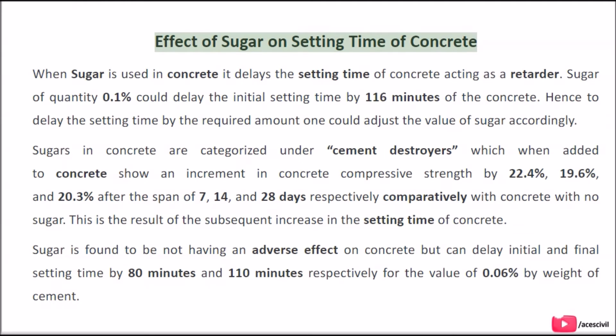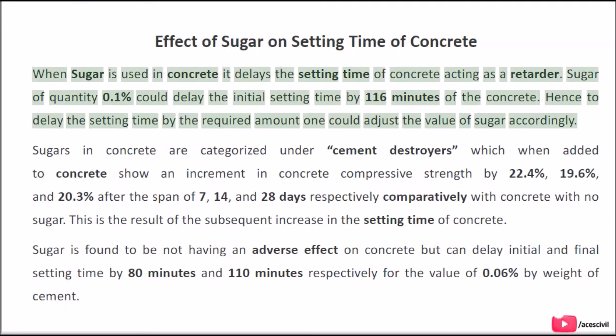Effect of sugar on setting time of concrete: when sugar is used in concrete it delays the setting time of concrete, acting as a retarder. Sugar of quantity 0.1% could delay the initial setting time by 116 minutes. Hence, to delay the setting time by the required amount, one could adjust the value of sugar accordingly.